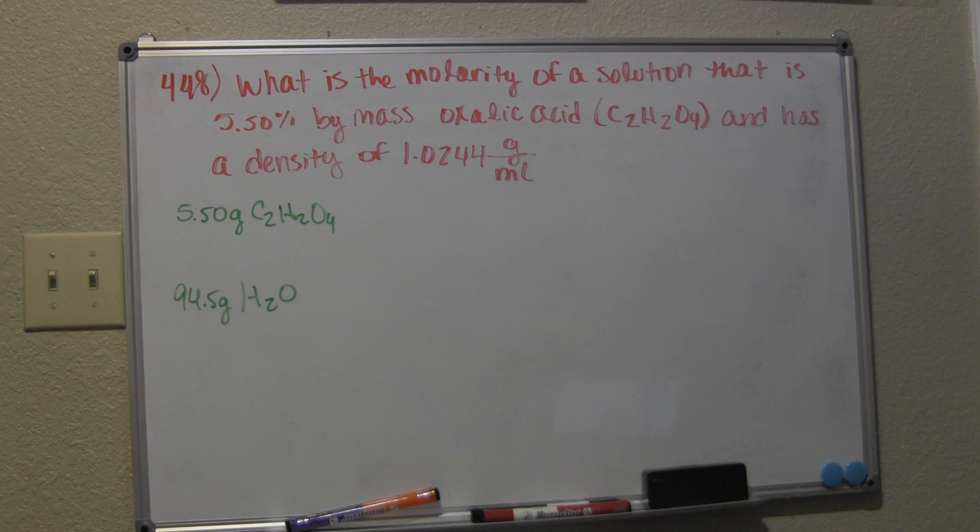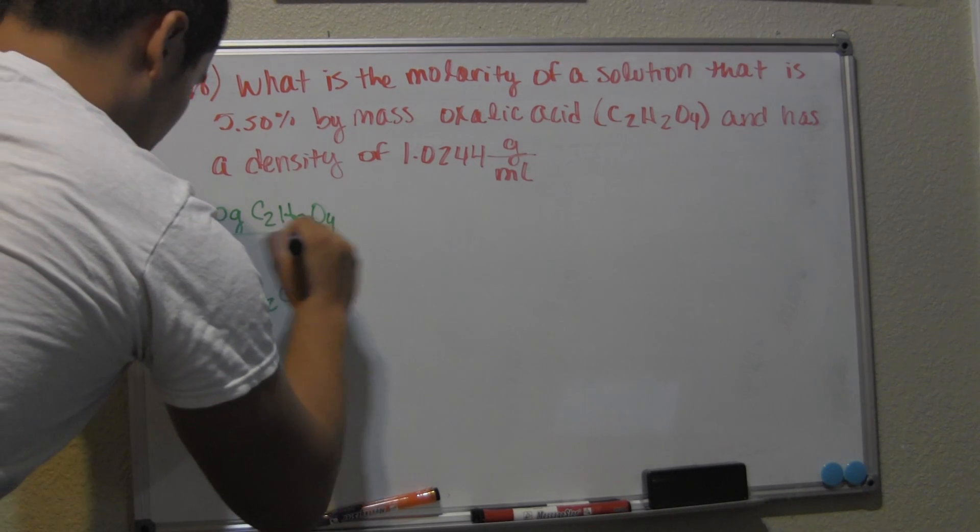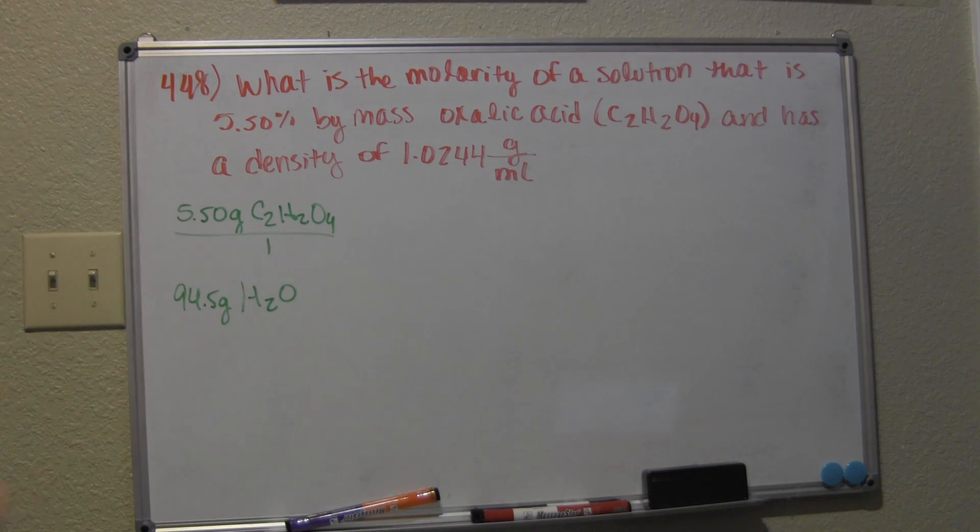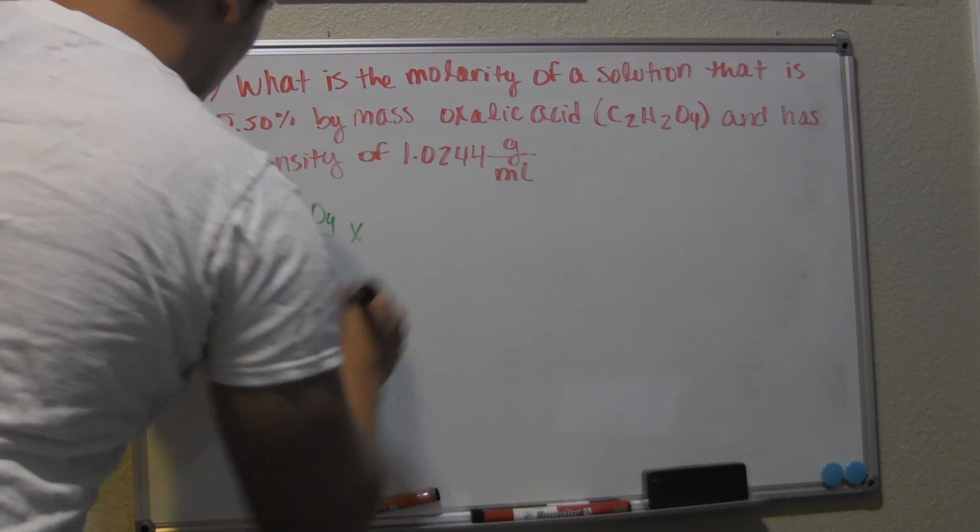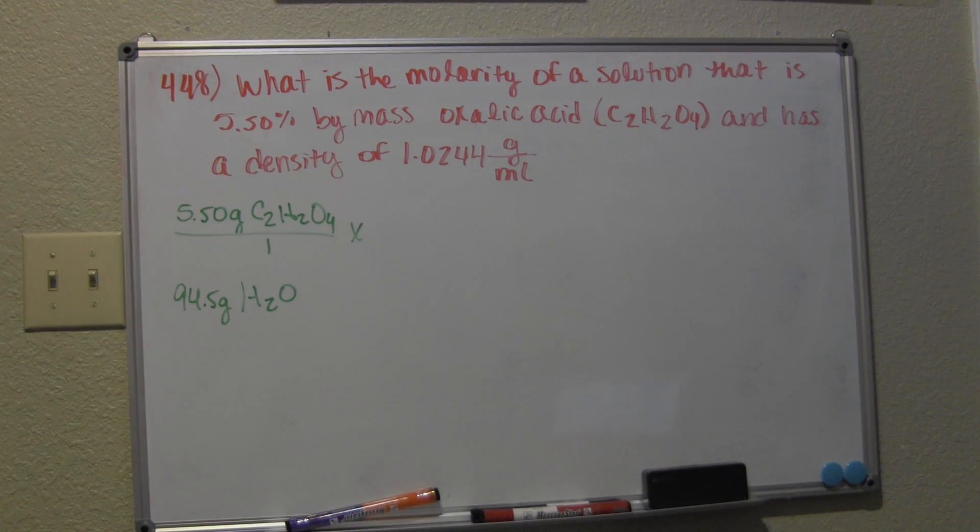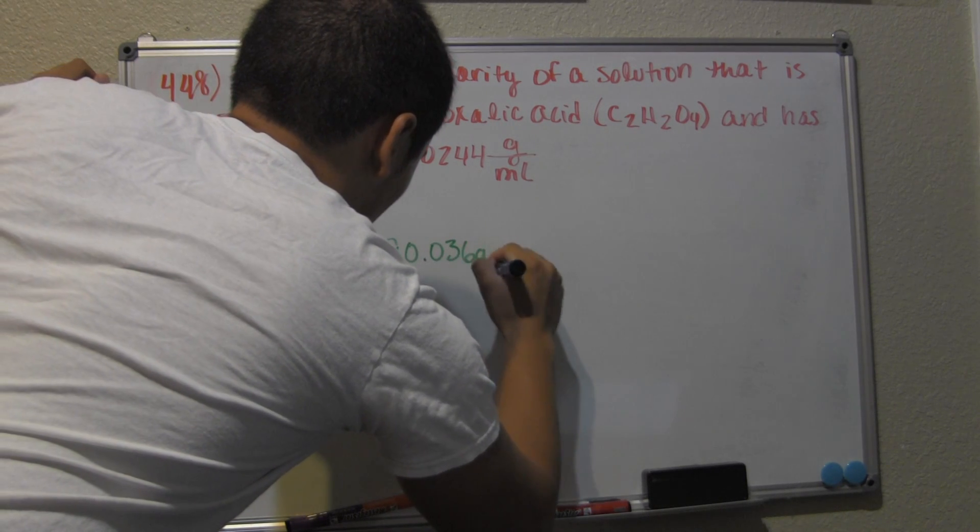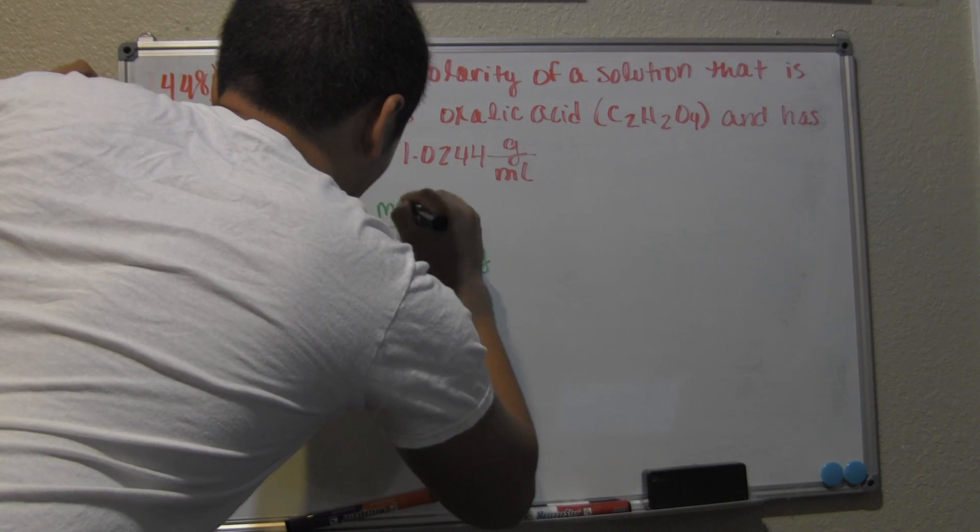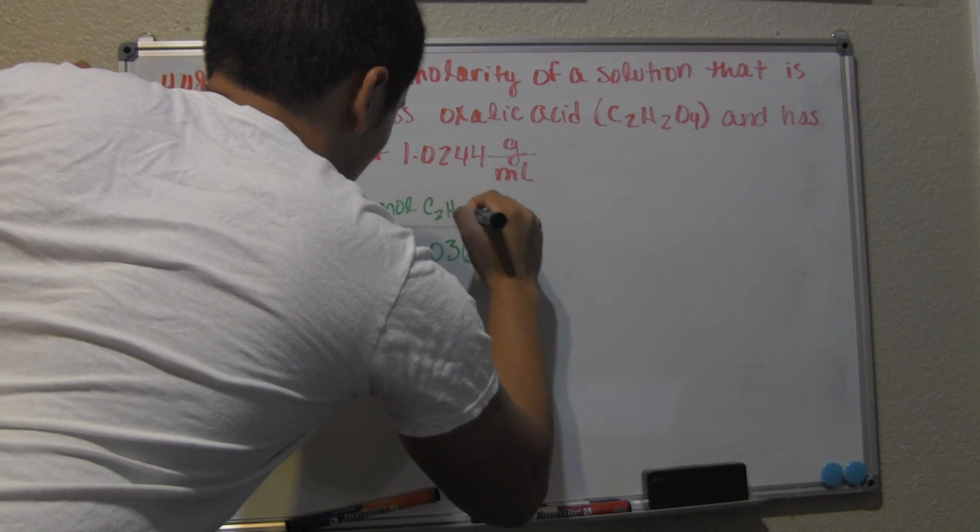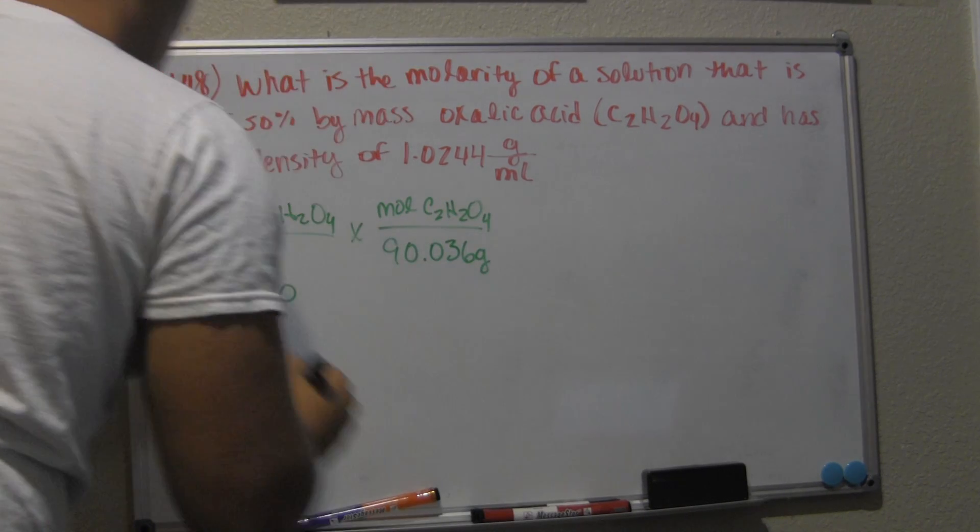Let's start by converting this mass of oxalic acid into moles. We multiply it by the molar mass, which is 12.01 times 2 plus 1.008 times 2 plus 16 times 4, which gives you 90.036 grams per mole of oxalic acid, C₂H₂O₄.